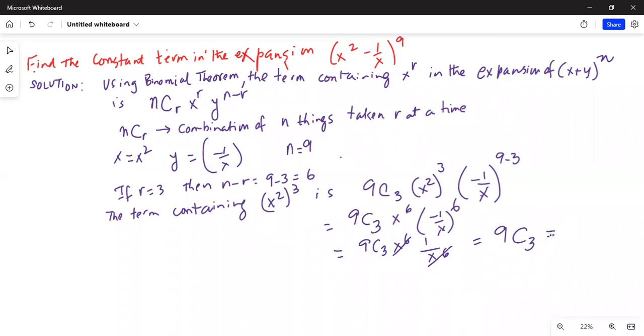We will use the calculator to find it. So TI-84, 9, then the math, then PROB, then number 3, and it is 9C3, and the answer is 84.